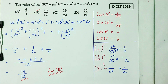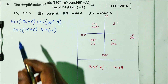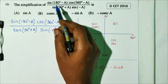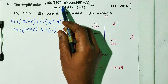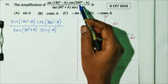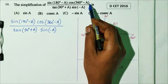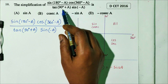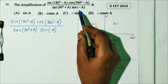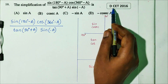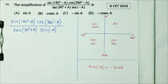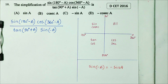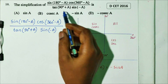DCT 2016 question number 10. The simplification of sin(180 minus A) times cos(360 minus A), divided by tan(90 plus A) times sin(minus A). 4 options are there. Check the right answer.